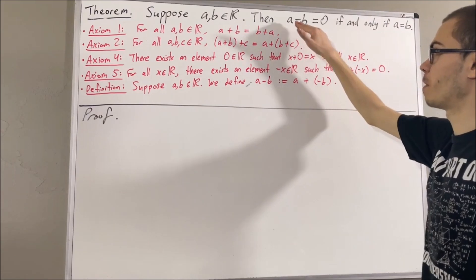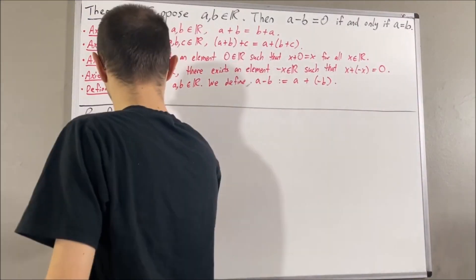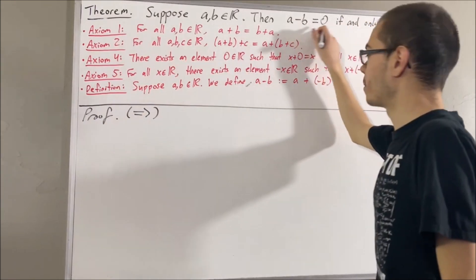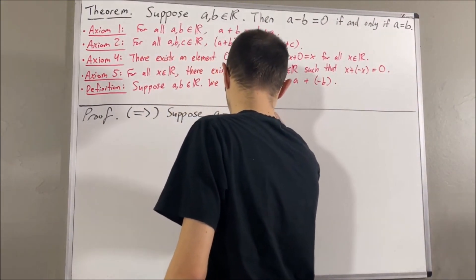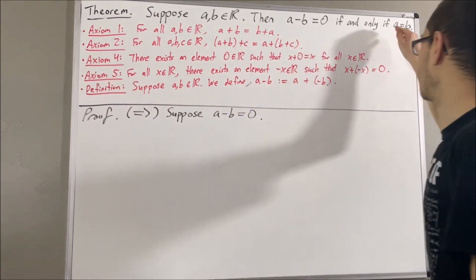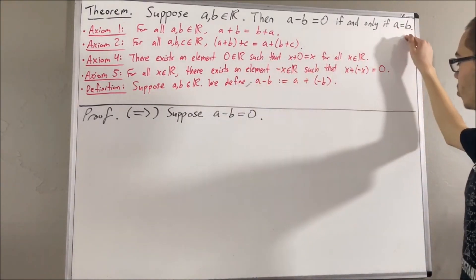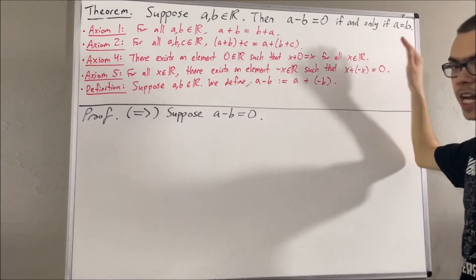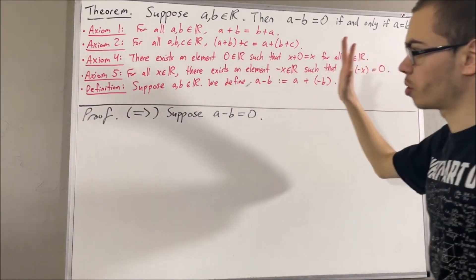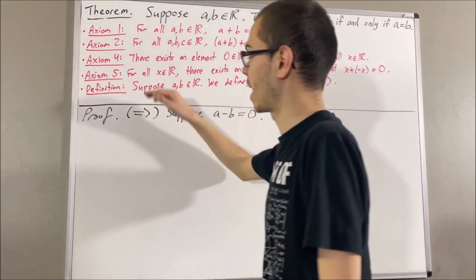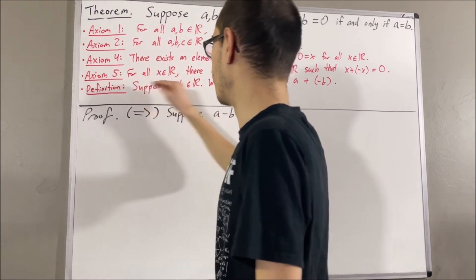So let's start off by proving the forward direction. That is, let's prove if a minus b equals zero, then a is equal to b. To prove that, suppose a minus b is equal to zero. From here, we want to show that a is equal to b, and we're going to establish that through a chain of equalities, applying axioms 1, 2, 4, and 5, and the definition of subtraction.